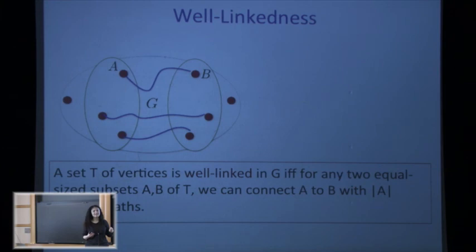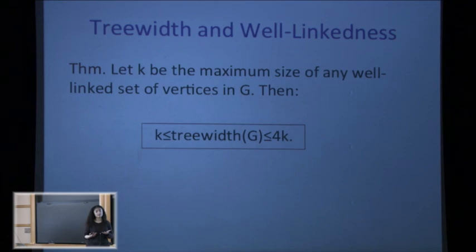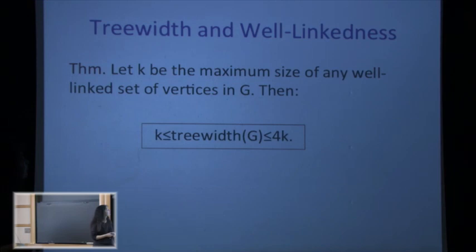This is a really strong connectivity requirement: no matter how you take two equal-size subsets, you can always connect them by disjoint paths. There is a surprising but very useful connection: if you take the largest set of vertices in your graph that is well-linked, its size equals the tree-width, to within a factor of four. So well-linkedness is a different way to define tree-width, and it played a central role in our proof.